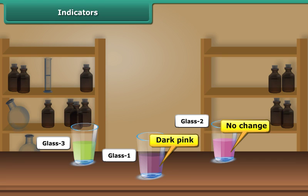The color in the third glass changes to green. Thus, we can conclude that the indicator solution obtained from china rose turns bright pink in the presence of an acid and green in the presence of a base. We can put a drop of this indicator solution in the desired food item to know whether it is acidic or basic.